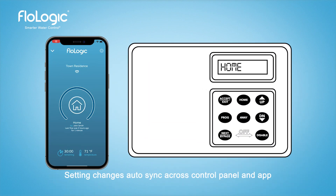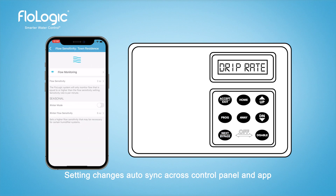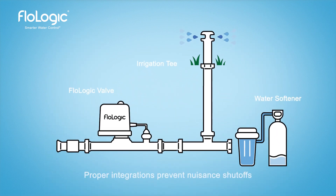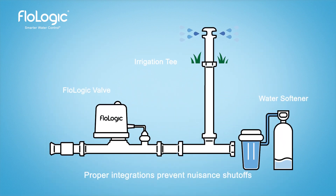You should also rule out water flow requirements that aren't leaks but could trigger auto shutoffs. Some appliances like humidifiers require an ongoing small trickle of water that requires raising the flow sensitivity setting. Irrigation systems and water softeners with backwash cycles can trigger auto shutoffs only if they are installed downstream of the FlowLogic system without being integrated properly per the installation instructions.